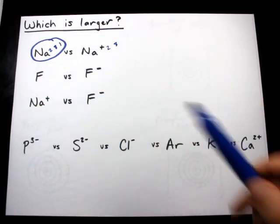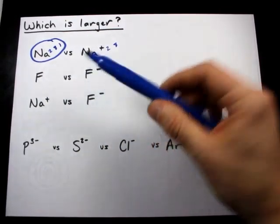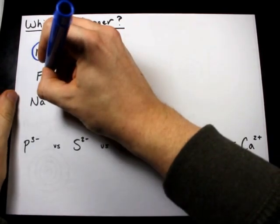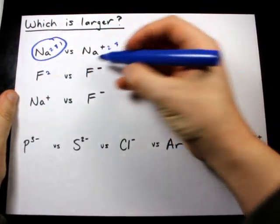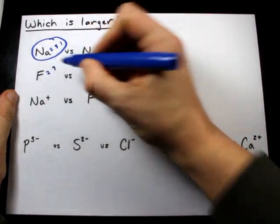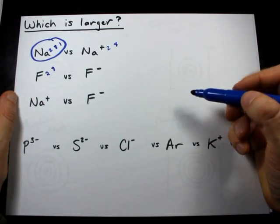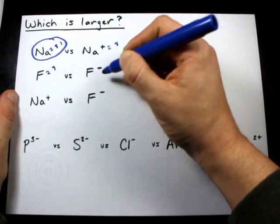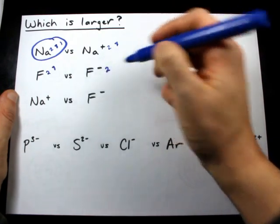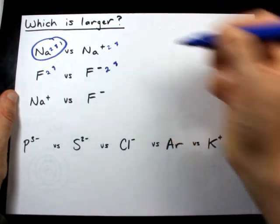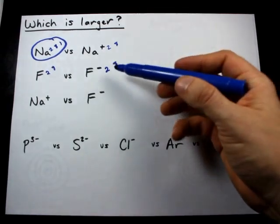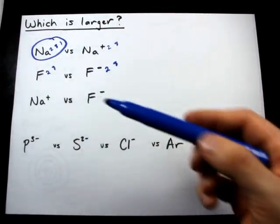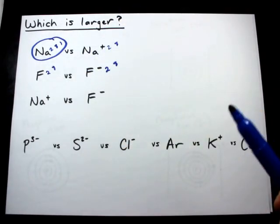In any case, fluorine versus fluorine minus. These are the same element. Fluorine, the neutral, has two electrons in the first shell, seven electrons in the second. Fluoride, which has an extra electron, has two in its first shell and eight in its outer shell. That is a complete octet, because fluoride prefers to have a minus one charge.